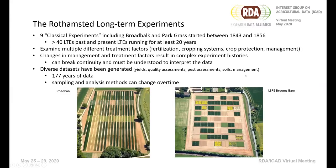Long-term experiments were started at Rothamsted between 1843 and 1856 by Laws and Gilbert. Today we've got around 10 existing long-term experiments, with about 50 altogether over the history of the site. These experiments examine multiple different factors. The two experiments shown here are Broadbalk, which is our oldest, and the large scale rotation at Broom's Balm, which is our newest. Both examine a range of treatment factors including crop rotation systems, crop management systems, crop protection and fertilization.